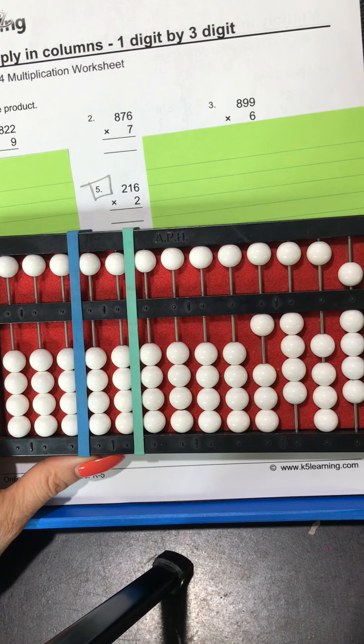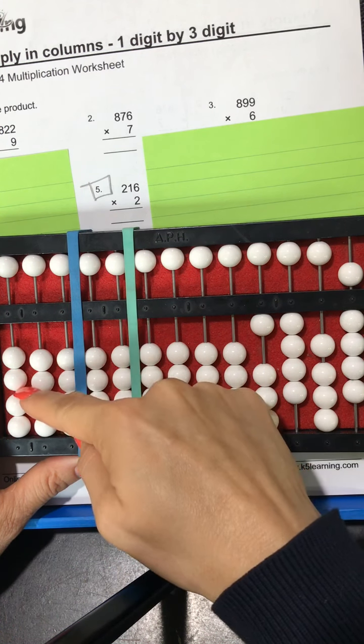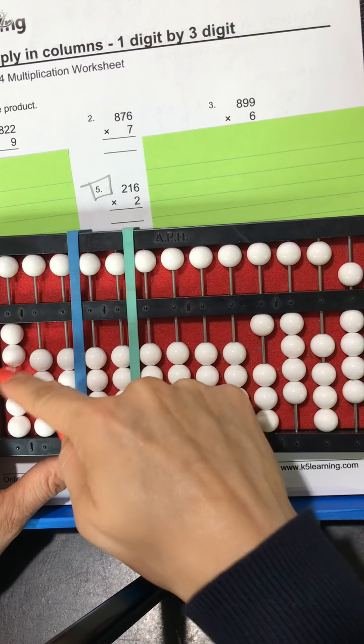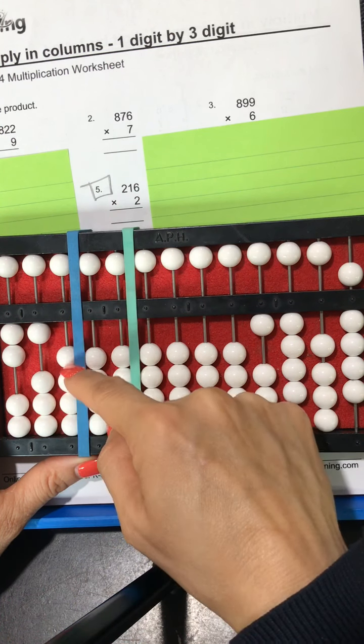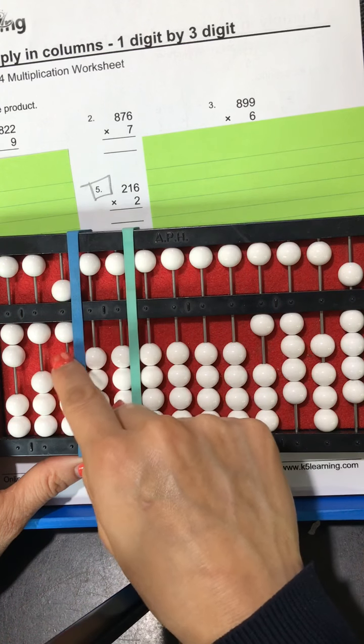Okay, so I'm going to start by setting up my math problem on the left hand side. I'm going to set 200 so there's two beads on that hundreds and then I'm going to set a one bead on my tens and then six beads on my ones column.